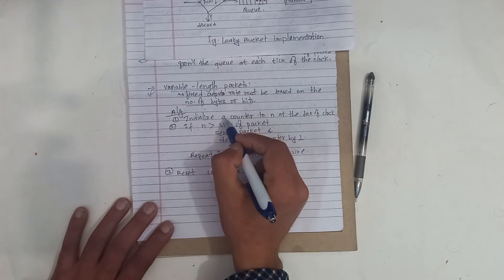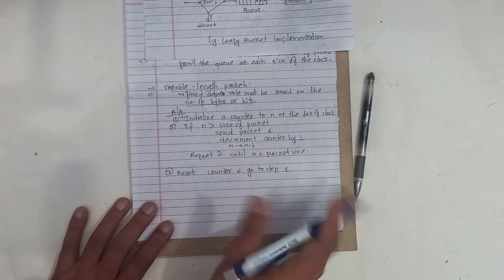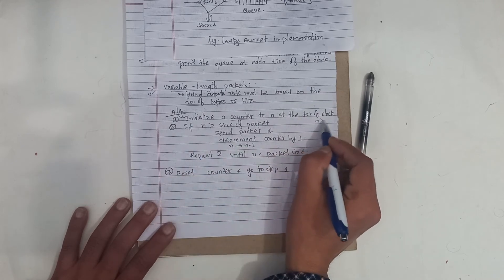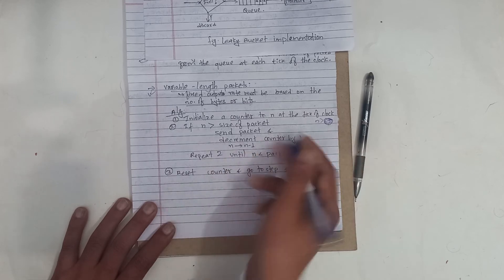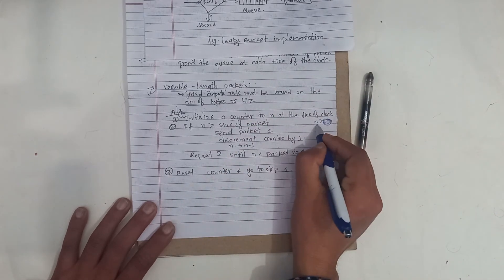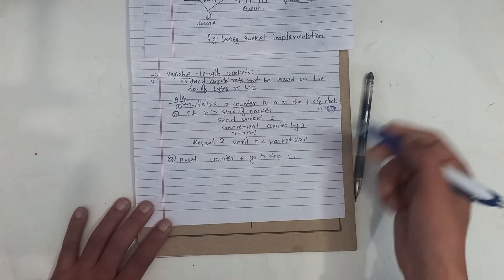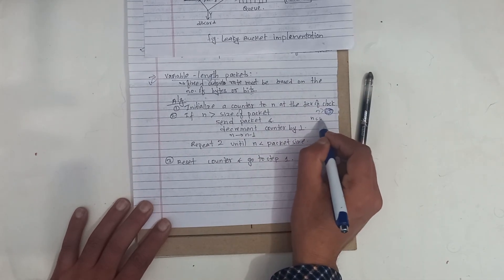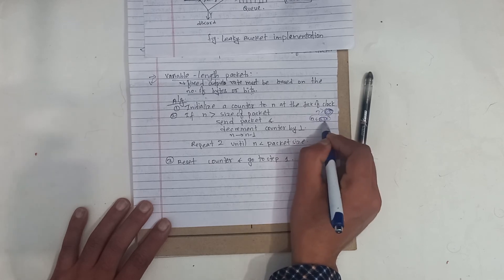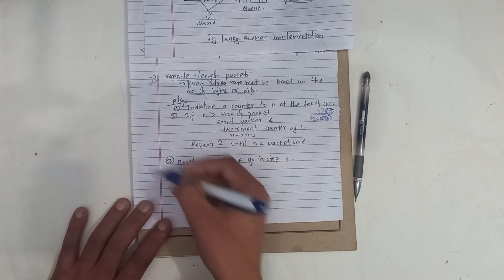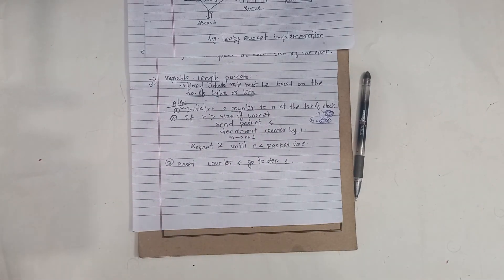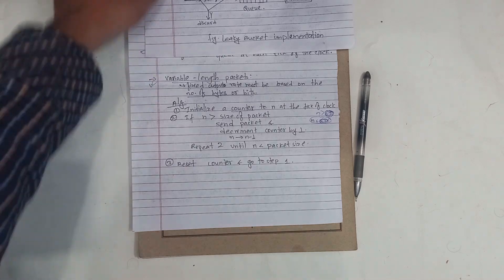We initialize a counter at each tick of the clock. If the counter is greater than the size of the packet, we send that packet and decrement the counter by the packet size. If the counter is less than the packet size, we cannot send. This handles variable length packets properly.